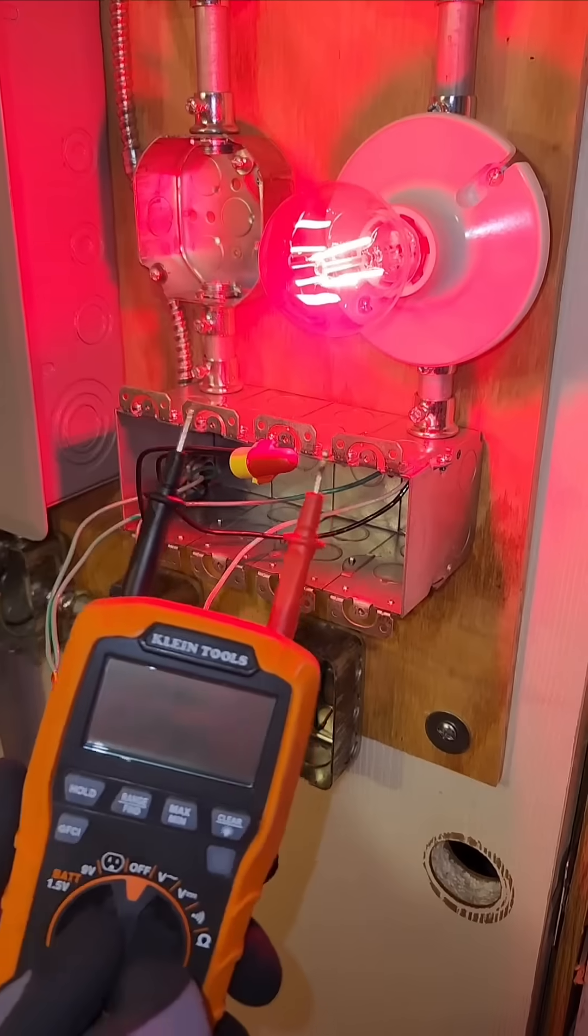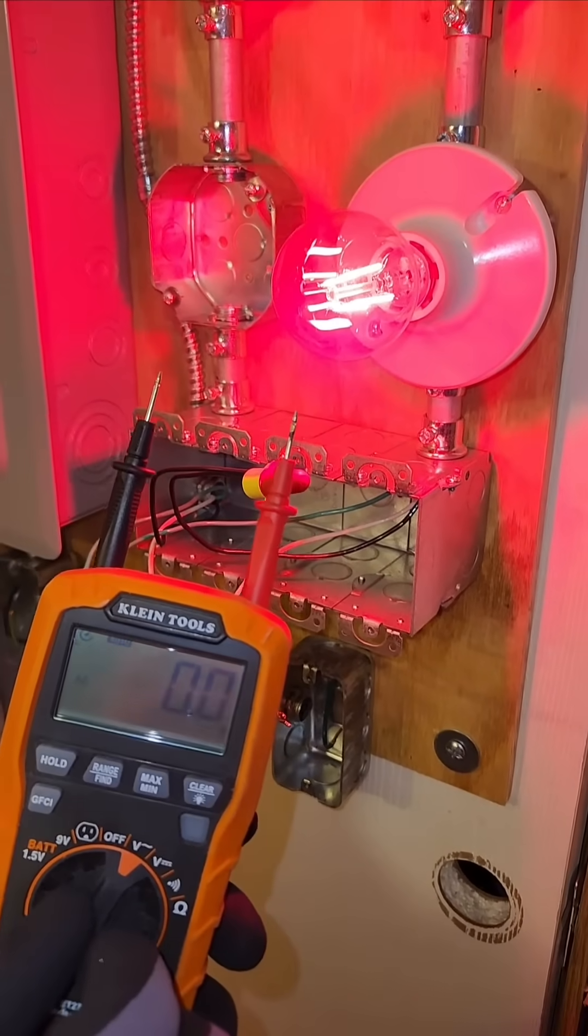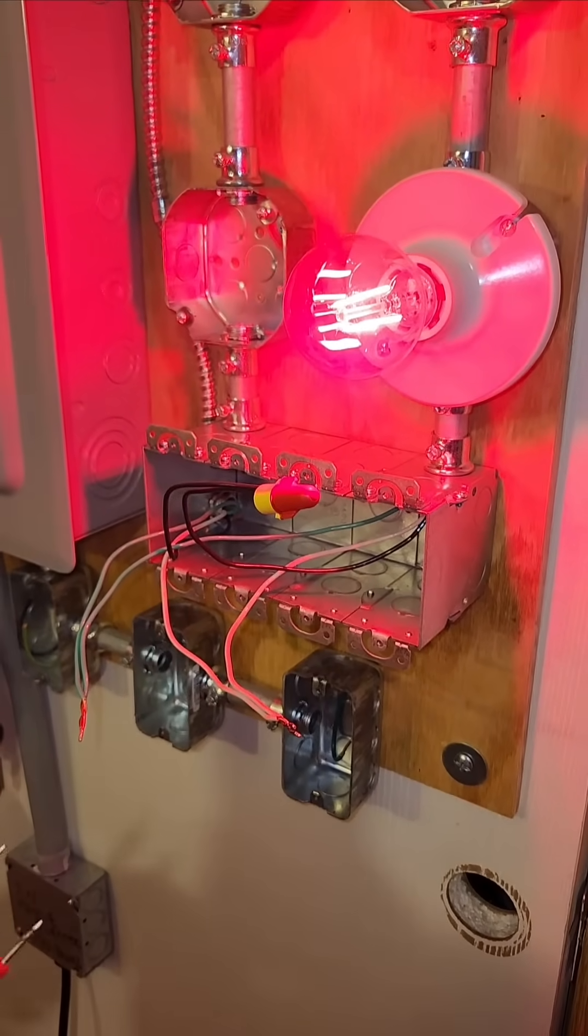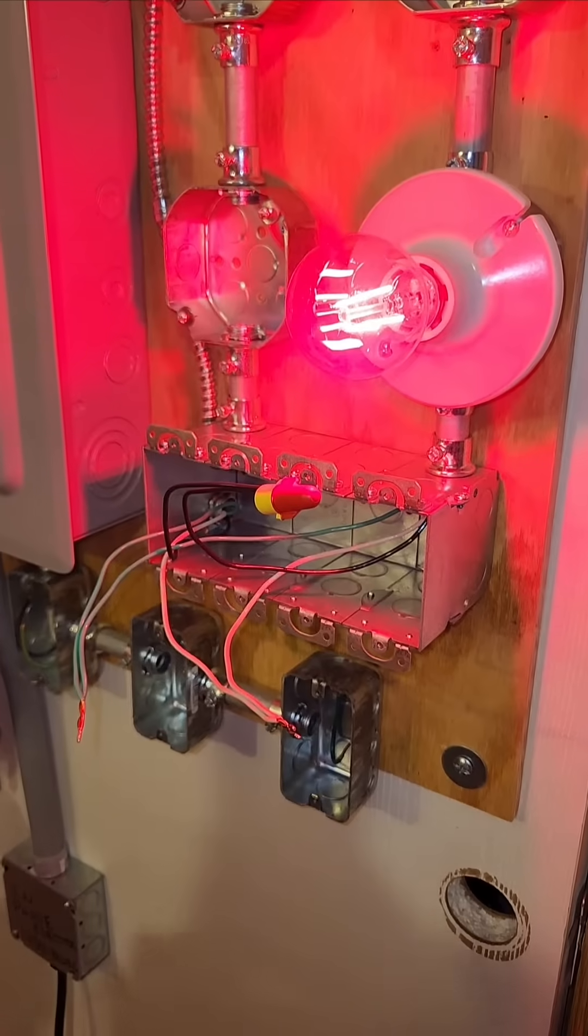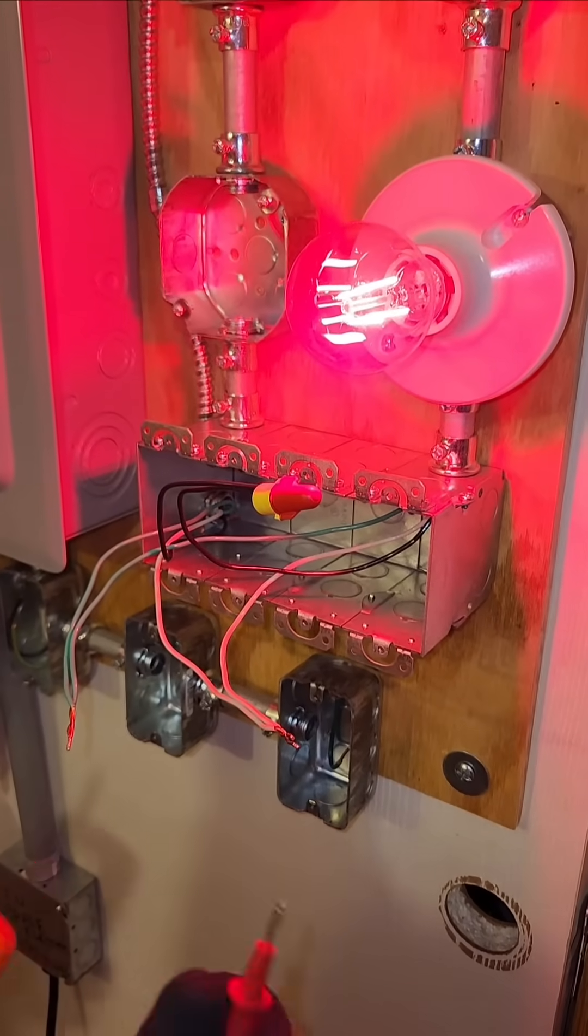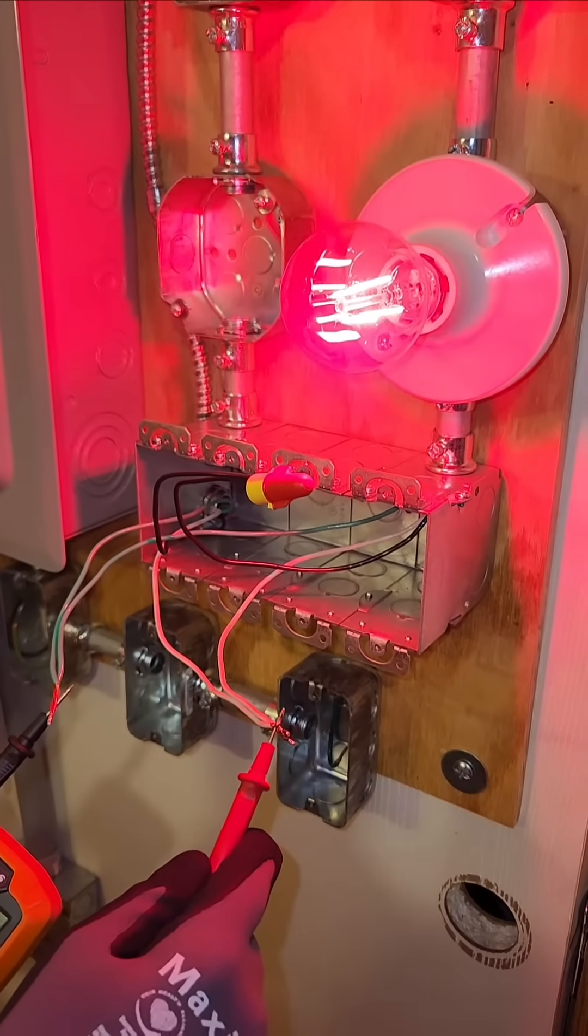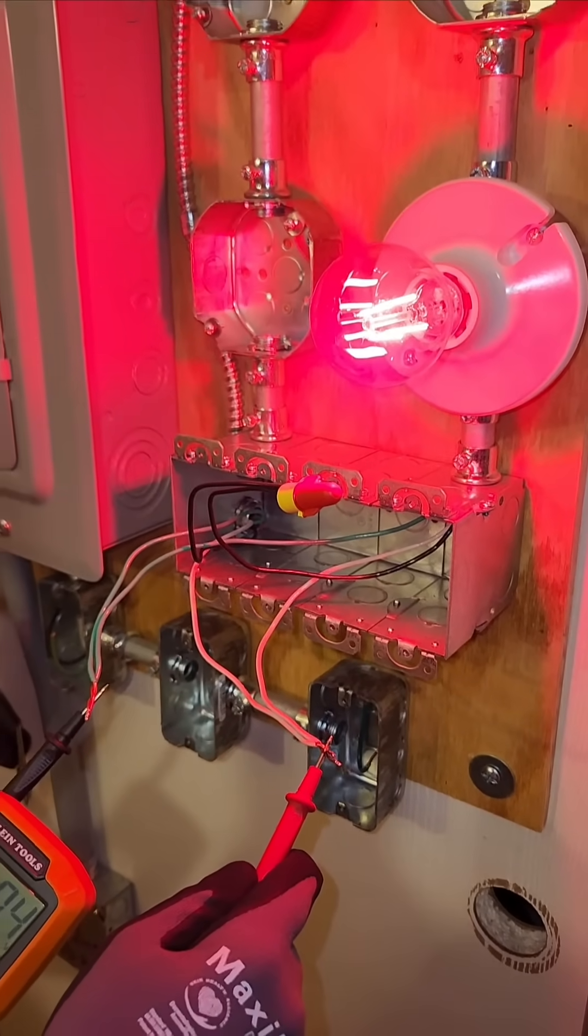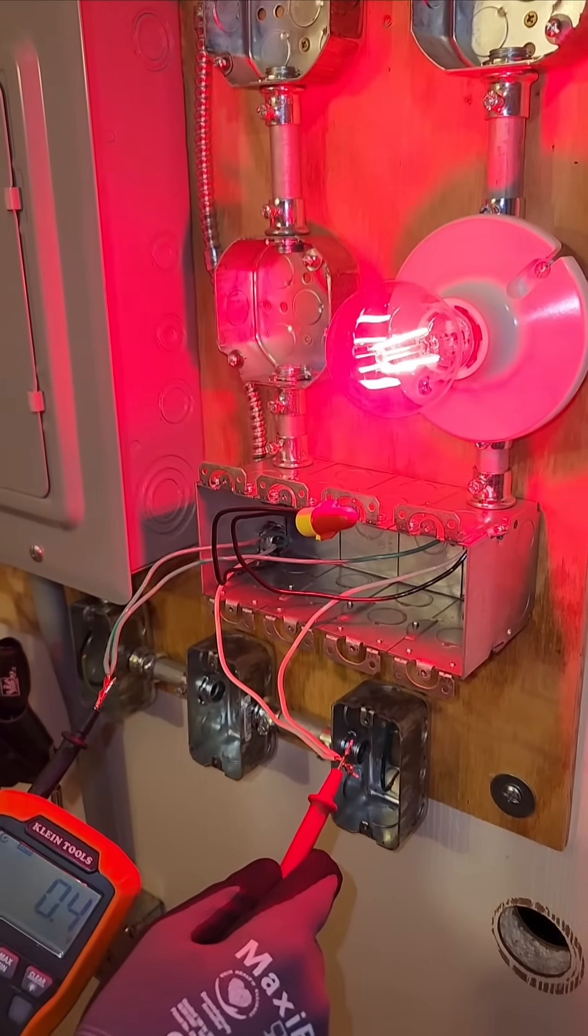Alright, so right now we have a fully functioning circuit that is properly grounded. So at this point in time we'll get zero volts approximately between the neutral and the ground.